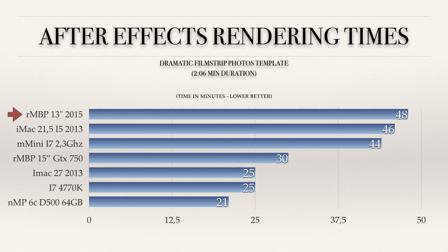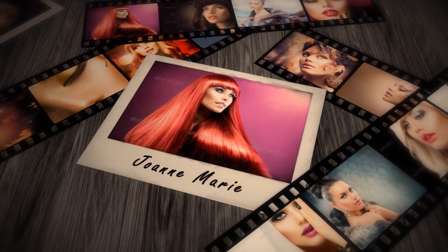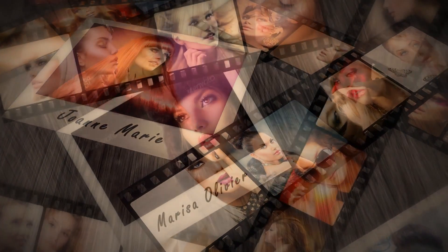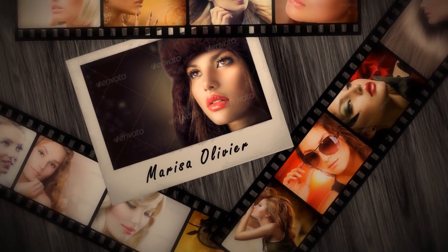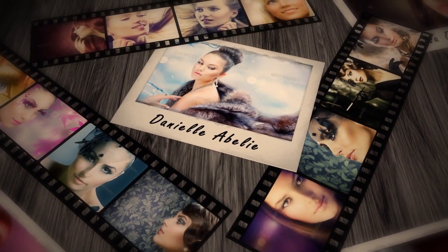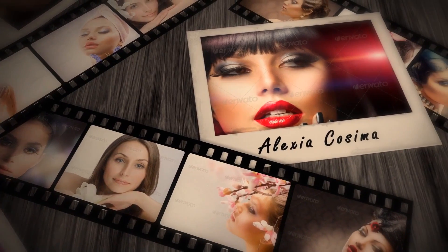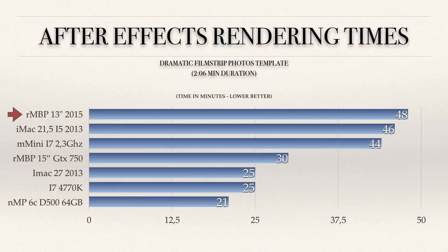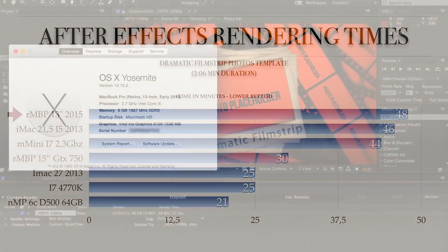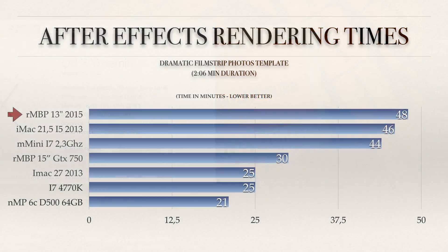Now let's move on to After Effects rendering times, the software I spend about 80% of my time in. I rendered one of my templates — the Dramatic Film Strip Photos template, created by me in 2014. It was not one of the most successful ones, but it is very heavy: about 10 compositions, each with about 20–30 layers, with motion blur and a lot of effects. The Retina MacBook Pro 13-inch 2015 takes 48 minutes, which I wasn't expecting to be that reasonable.